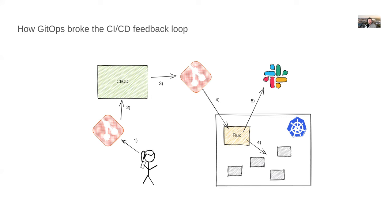Now the infamous topic: how GitOps broke the CI/CD feedback loop. As a developer, you do your code changes, push to Git, your CI/CD pipeline kicks off, builds the Docker image, and then the CI/CD pipeline in some way makes a change into your GitOps repository — this is basically where your Kubernetes YAML files live.